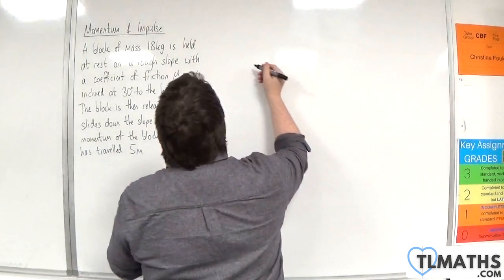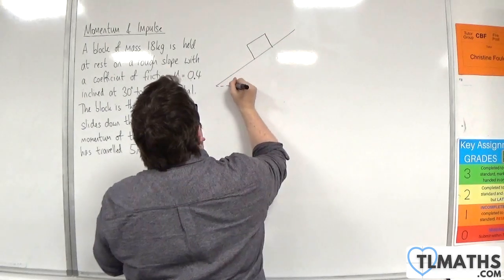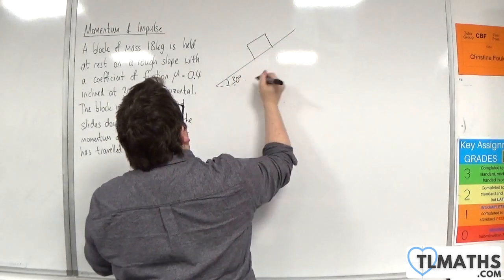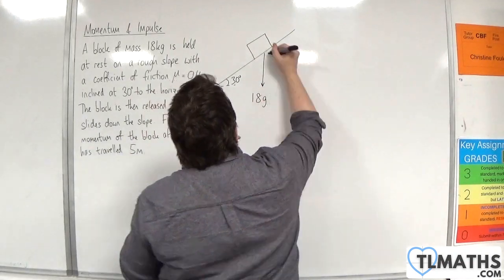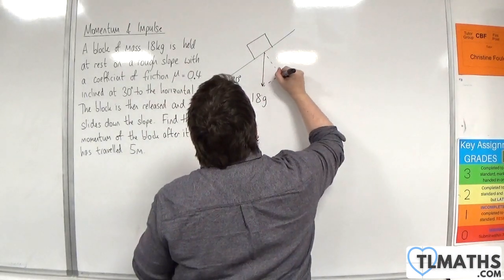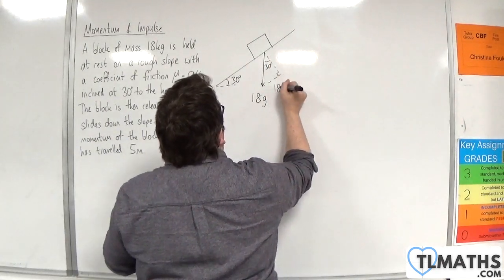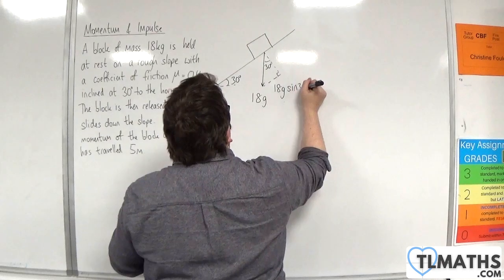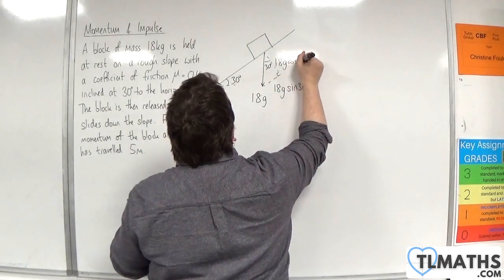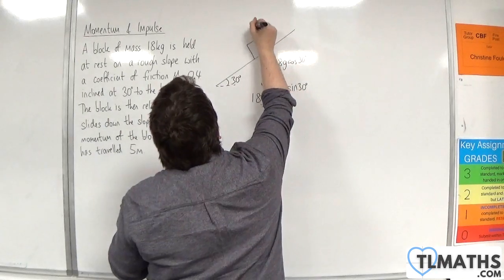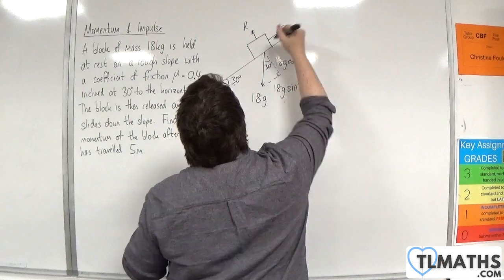So let's draw a diagram so we can visualize what's going on. Here is my block. It's on a slope at an angle of 30 degrees. It's got a weight of 18g. We'll complete the triangle. That's 30 degrees, so the opposite side is 18g sin 30 and the adjacent side is 18g cos 30. We have a normal reaction force, and because it's going down the slope, our frictional force will work up the slope.